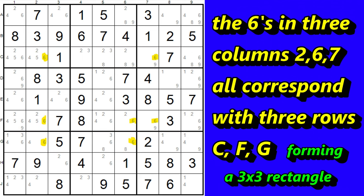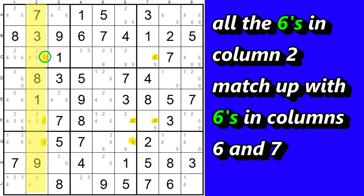In this case, column 2 has 3 6s. The 6 in row C matches the 6 in column 7. The 6 in row F matches the 6s in column 6 and 7. And the 6 in row G matches the 6 in column 6. So all 3 6s in column 2 match up with the 6s in the other 2 columns.